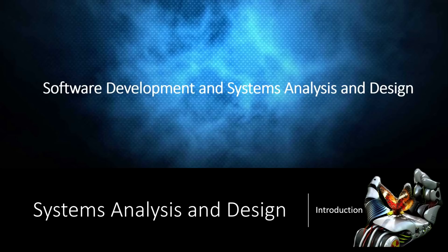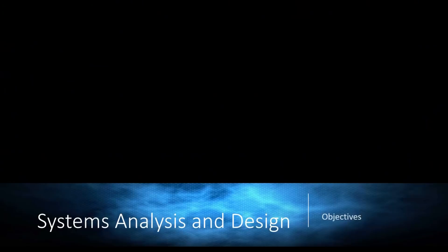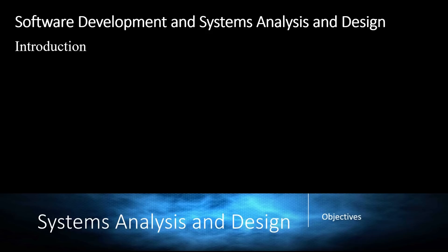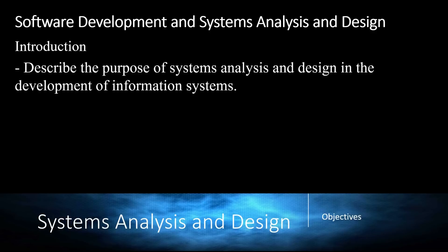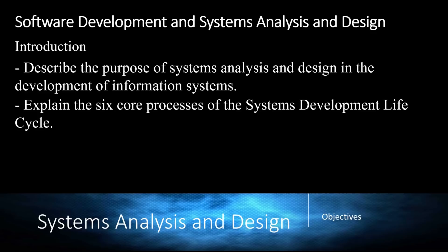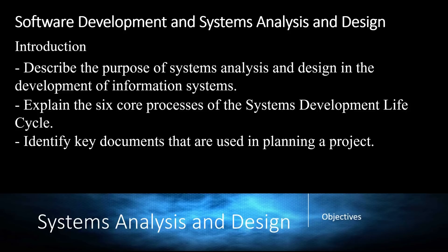To start our conversation today, let's talk about the objectives. We're going to describe the purpose of system analysis and design in the development of information systems, why it's important, and what role it plays in the lifecycle of development. We're also going to explain the six core processes of the system development lifecycle, and identify key documents used in planning a project. This is very important because every guideline to a project, especially a large one, is fundamental to documentation.